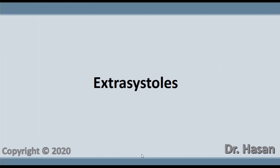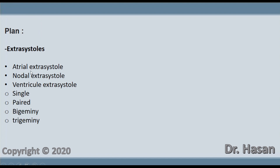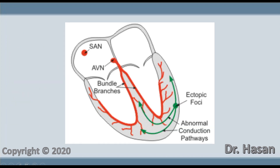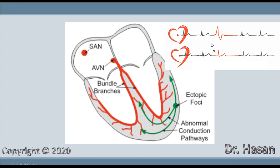In this chapter we will talk about the extrasystoles, also known as premature contractions. We will cover all their types: atrial extrasystole, nodal extrasystole, and ventricular extrasystole. An extrasystole is an extraordinary or additional contraction of the heart, recorded when a pathological focus appears in any part of the myocardium. This focus generates an impulse that excites the heart earlier than normal excitation would occur.